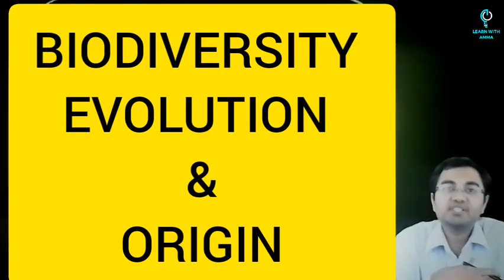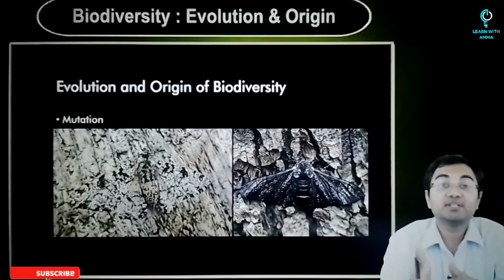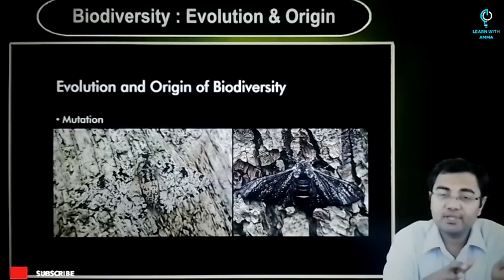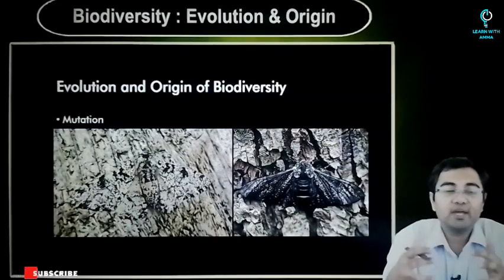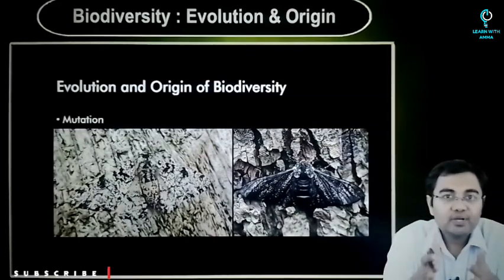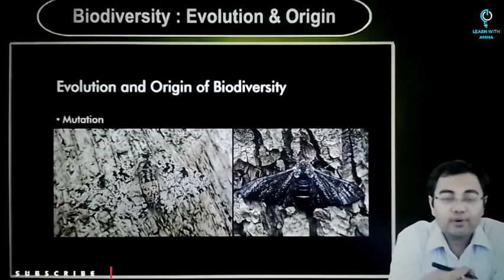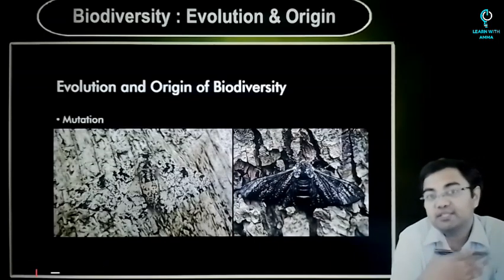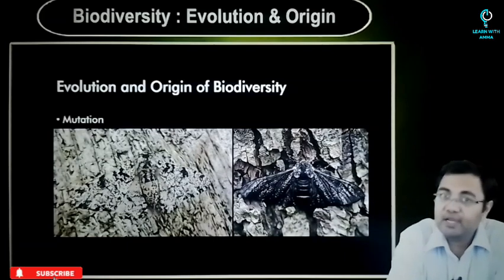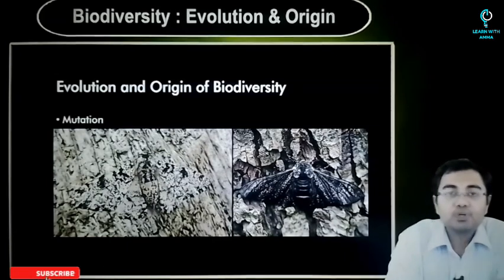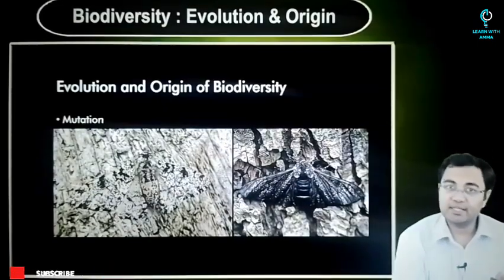Now that we have understood what is the meaning of biodiversity, how do we measure biodiversity, and what are the different kinds of biodiversity, the next thing we need to understand is how does biodiversity evolve? How do we come to where we are currently? How does a population of organisms develop over millions of years? Let me take some examples so that you will understand how exactly things happen.